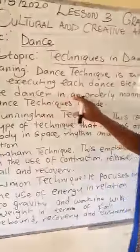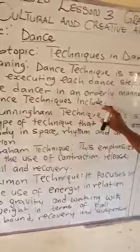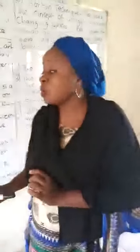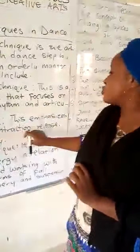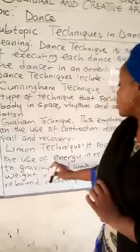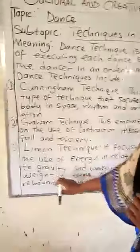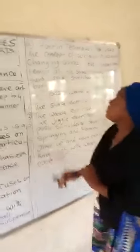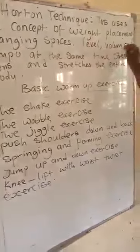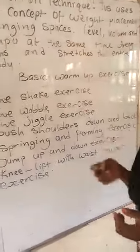To recap: dance technique is the act of executing each dance step by the dancer in an orderly manner. The four dance techniques are: one, the Kornikha technique — focuses on body in space, breathing, and articulation; two, the Graham technique — emphasizes contraction, release, fall, and recovery; three, the Lehman technique — focuses on energy in relation to gravity, working with weight in terms of fall, rebound, recovery, and suspension; four, the Halton technique — uses the concept of weight, placement, changes of space, level, volume, and tempo, and stretches the entire body.